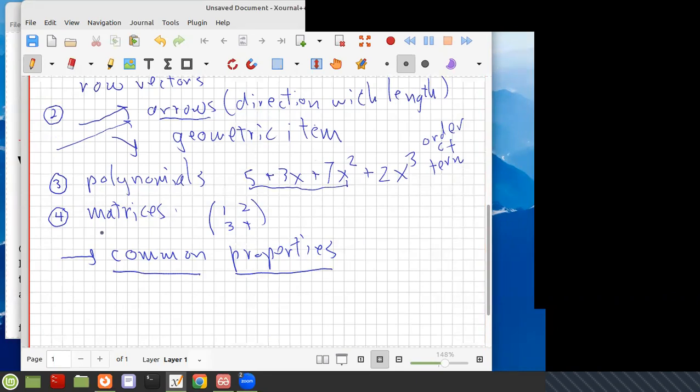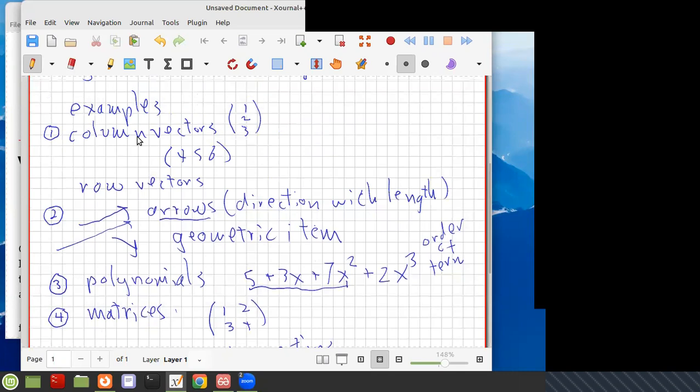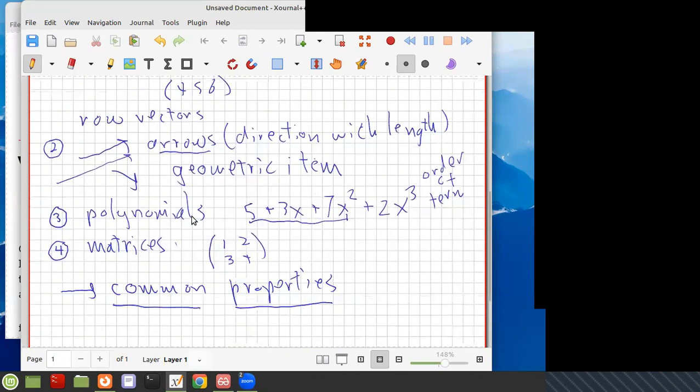Now, in the end, it's going to turn out that all of these things have a standard representation as column vectors. So if you know what column vectors are or if you understand those, then you're going to understand everything. And so the point is, when you apply this in applications, they may come up in all kinds of different ways. And there are other situations.